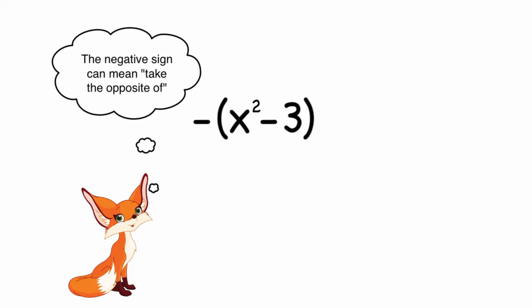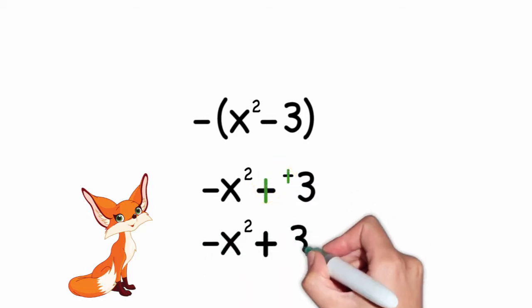The opposite of that is negative x squared minus a negative 3. If you subtract a negative, that's the same thing as adding the positive. So I get negative x squared plus 3.